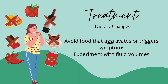The next strategy is dietary changes. Patients identify certain foods such as chilies, chocolate, citrus, tomato, alcohol, and caffeine and carbonated drinks that can trigger or aggravate their symptoms; it is best to avoid or minimize intake of these foods. As bladder volume may affect the symptoms, experimenting with fluid intake may also be beneficial to determine an amount of water intake that would reduce symptoms.